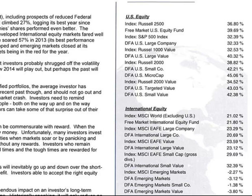For instance, if you look under the U.S. equities section on the right in that subcategory, those are all indexes of various asset classes of U.S. equities or U.S. stocks. The first one you'll see is the Russell 2,500 index — that's an index of 2,500 Russell index stocks. Below that is the Free Market U.S. Equity Fund, and that is your key fund because that is your fund, showing the gross returns for the year.